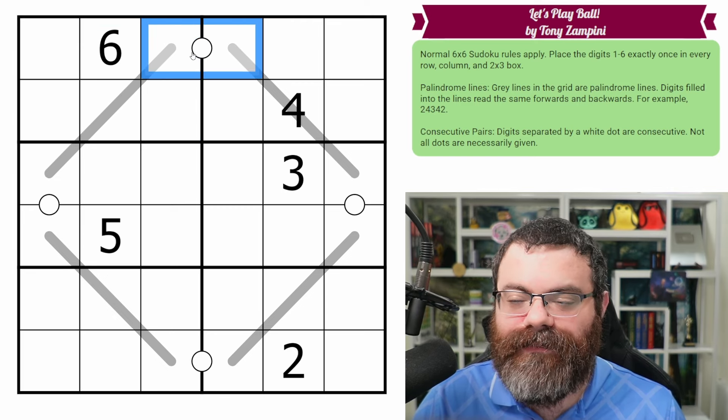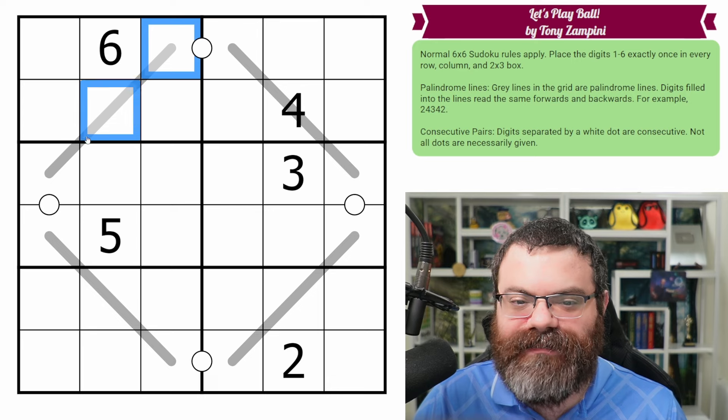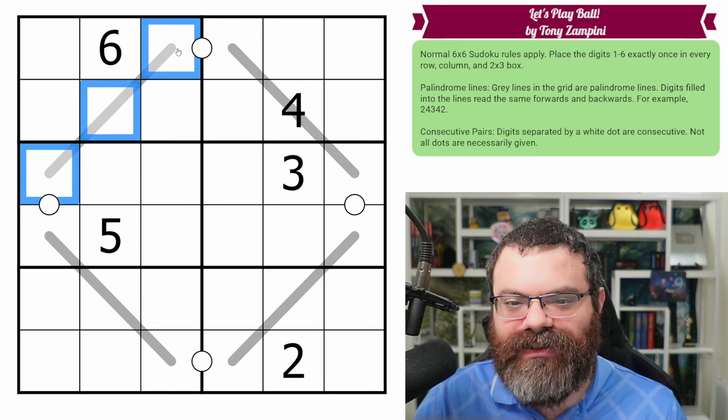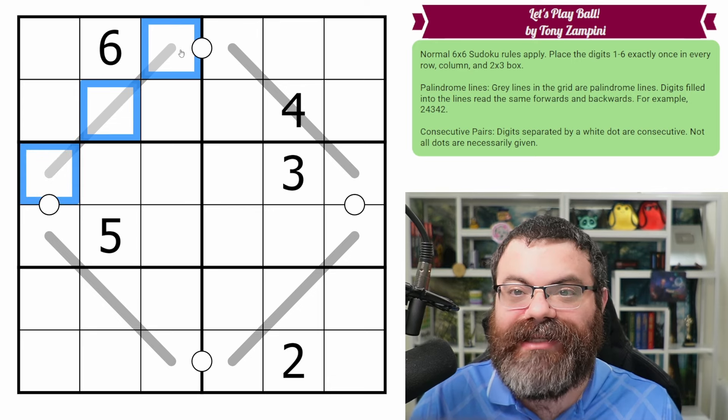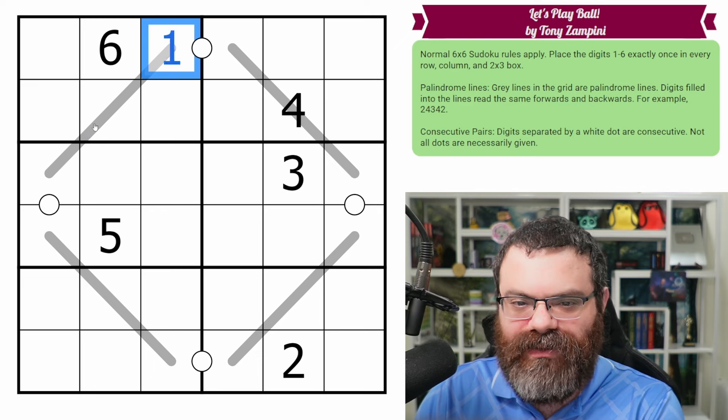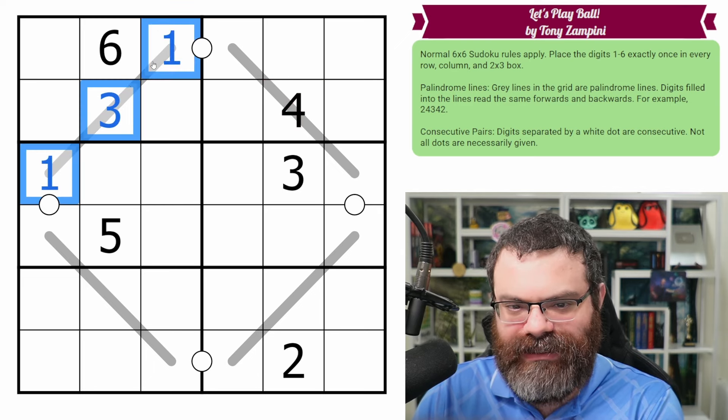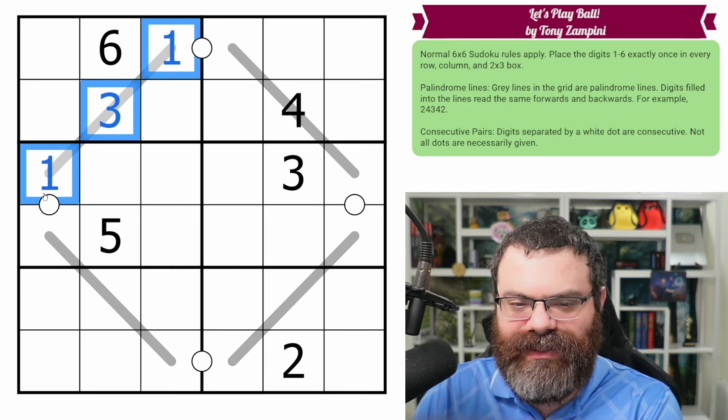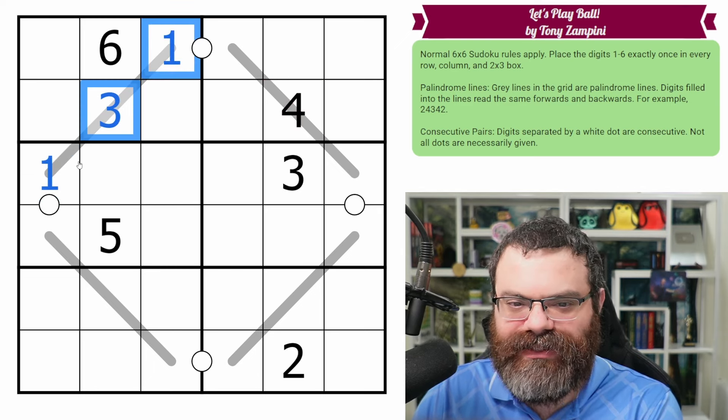We also have these palindrome lines in the grid. The way palindrome lines work is they have to read the same forwards and backwards. So for example, it could be one, three, one. It reads one, three, one this way and one, three, one this way. So however you read it, it should read the same.